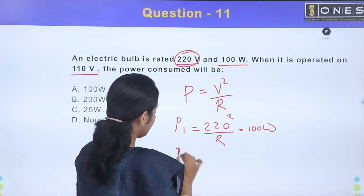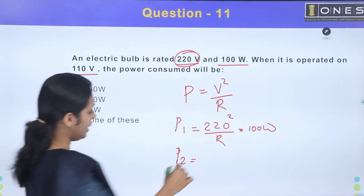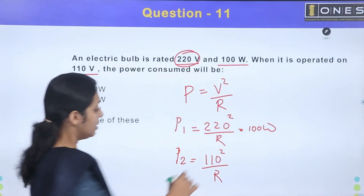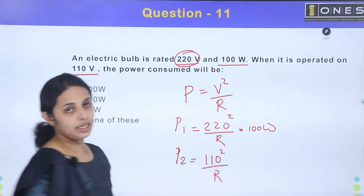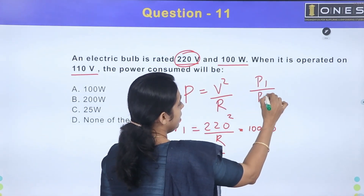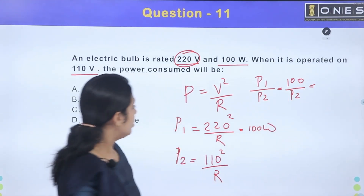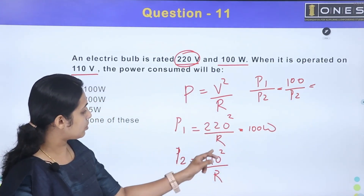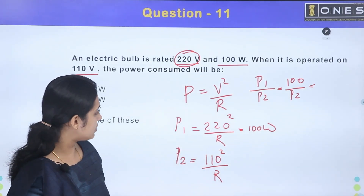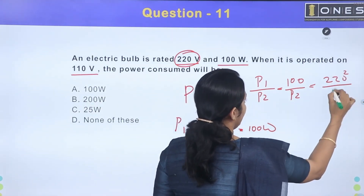The power is V² divided by R. We can see P1 divided by P2. That is 100 divided by P2, which equals 220² divided by R over 110² divided by R. We can cancel R from both sides.